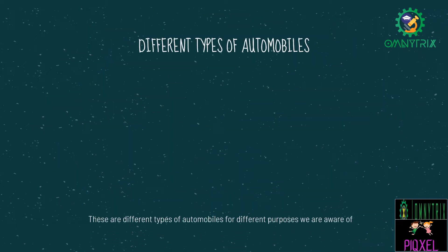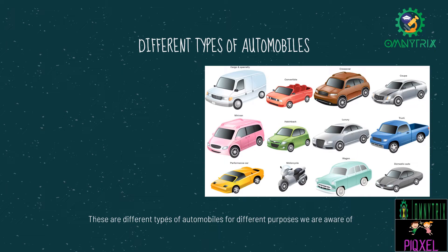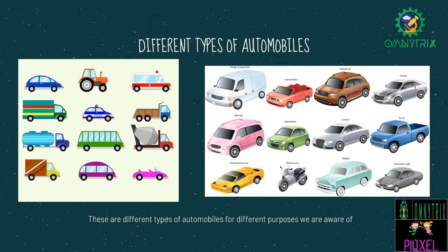Different types of automobiles. These are the different types of automobiles for different purposes we are aware of. In this picture, you can see a car, a taxi, a truck, a fire engine and a lot of other vehicles which we see around in our daily lives. These are few examples of automobiles.